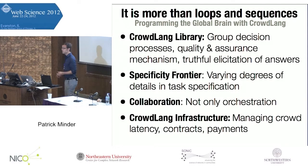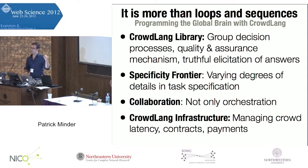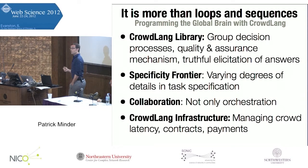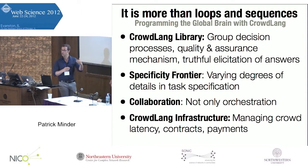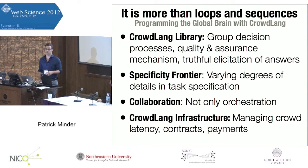For example, group decision processes or things like how to elicit truthful answers. Further, we try to implement a sort of specificity frontier where we have on one hand clearly defined and structured algorithms and on the other hand just common goals — such as 'I want to go to Chicago, make some holidays for $1,000.' How to solve this problem I don't know exactly at first, but possibly as the process goes on we will converge to a highly defined algorithm. Additionally, we handle things like crowd latency management and the integration of different crowdsourcing platforms.